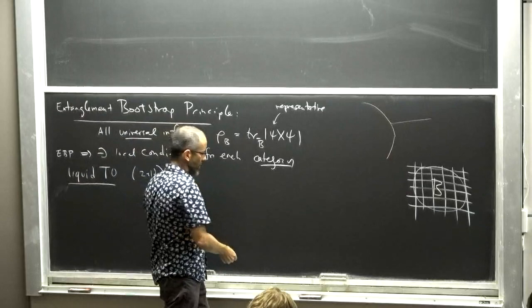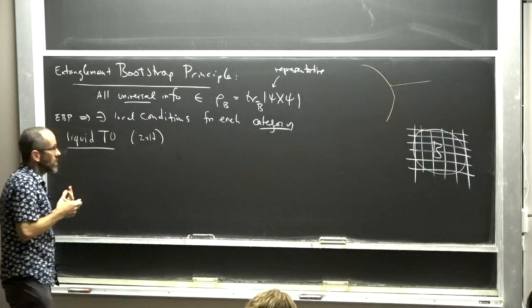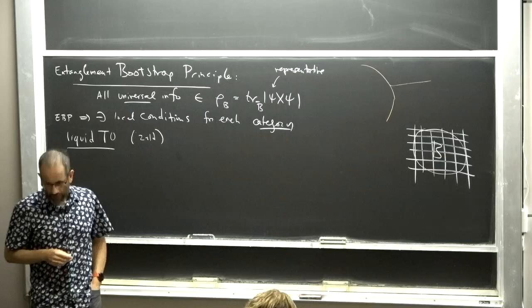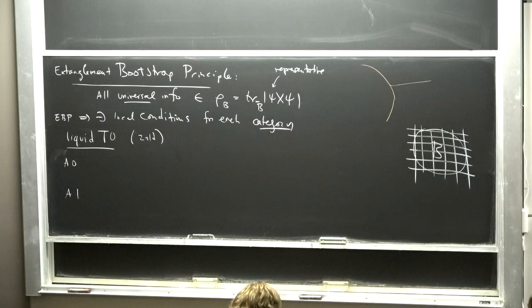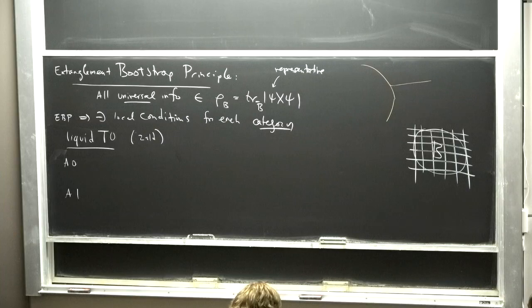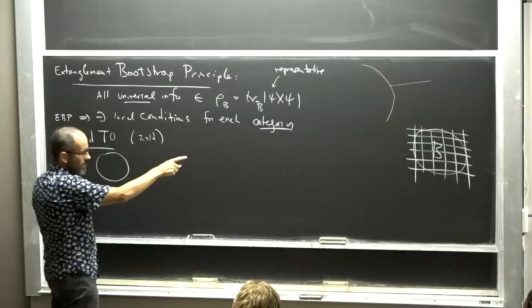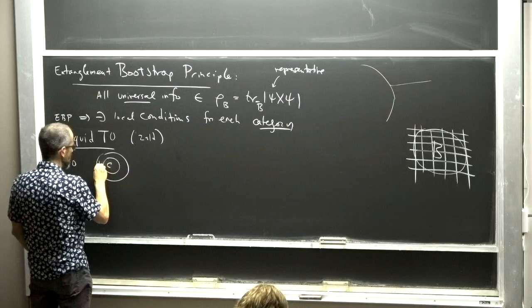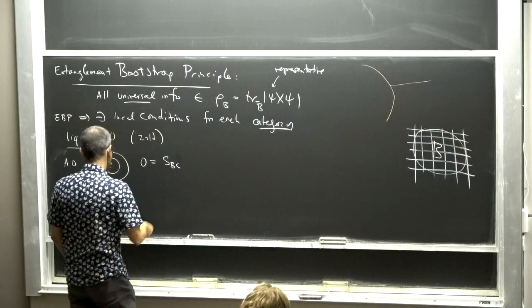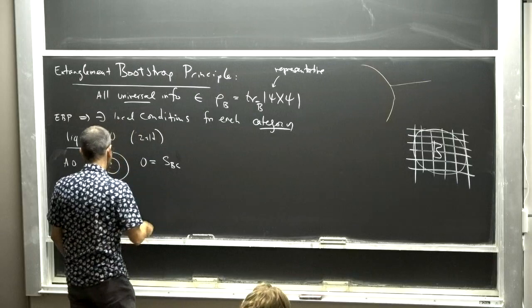That's one role this machine can play: to fill in that empty shell. But the second, more important role is to figure out what the shell should be. In two plus one dimensions we're pretty sure what's going on, but in higher dimensions the situation is much more open. There's quite a wilderness even in 3+1 dimensions liquid topological order. Let me tell you the two conditions — A0 and A1 — that are sufficient for a wave function to represent liquid topological order.